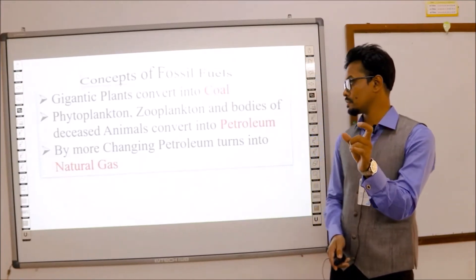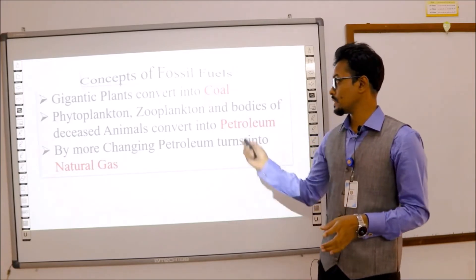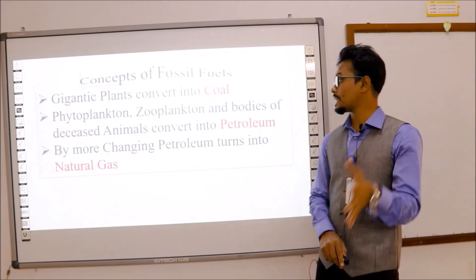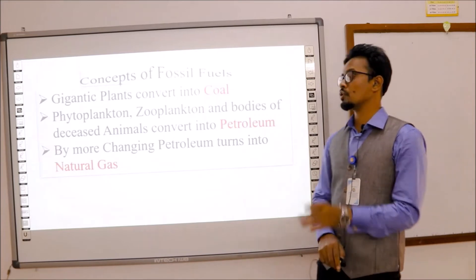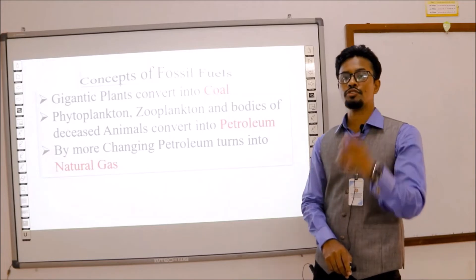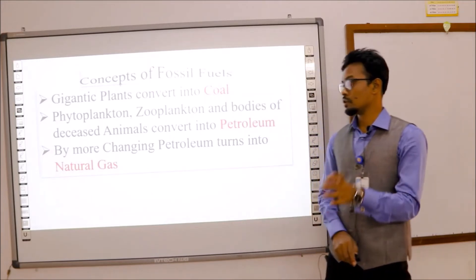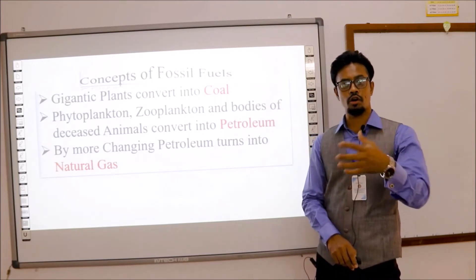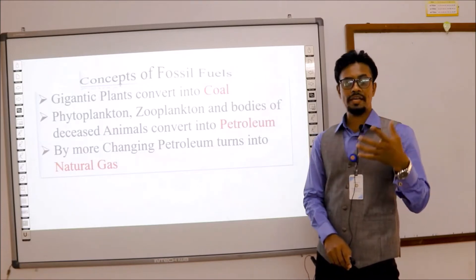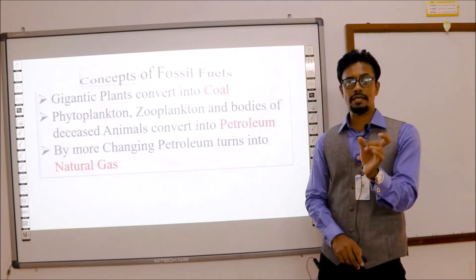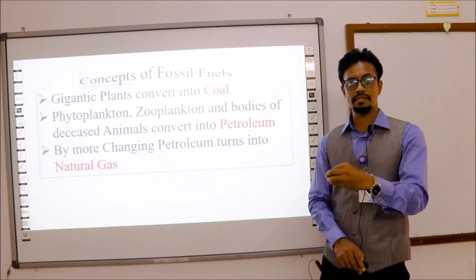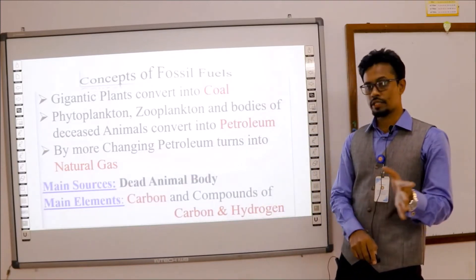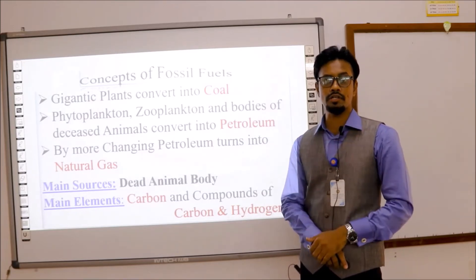Fossil fuels we get mainly from living plants or animals. Coal we get from gigantic plants — gigantic plants convert to coal. Phytoplankton, zooplankton, and other bodies of deceased animals convert into petroleum, and petroleum by further change turns into natural gas. So the main source is dead animal and plant bodies, and the main elements of fossil fuel are carbon and compounds of carbon, like hydrocarbons.